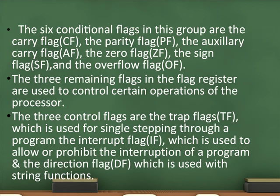The six conditional flags in this group are: the carry flag CF, the parity flag PF, the auxiliary carry flag AF, the zero flag ZF, the sign flag SF, and the overflow flag OF. The three remaining flags in the flag register are used to control certain operations of the processor.